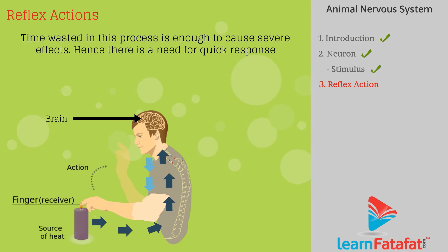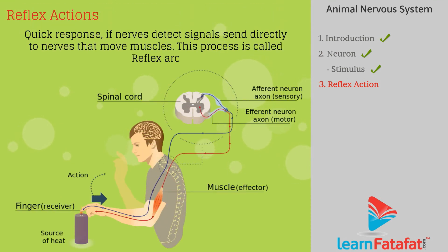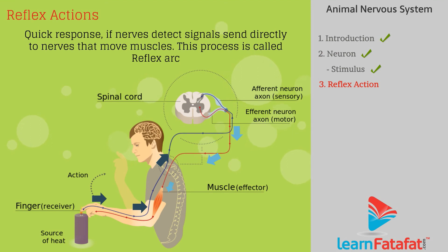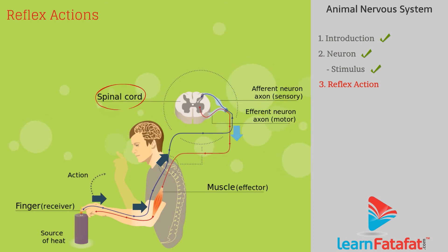Hence, there is a need for quick response. This need can be solved if nerves that detect signals send signals directly to the nerves that move muscles. This process is called a reflex arc. Thus, when we touch a hot object, the nerves that detect heat send a signal to the spinal cord, from where the response signal is transmitted to the nerves that move the muscle, causing a quick action.